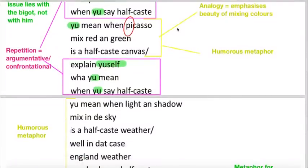You mean when Picasso mixed red and green is a Half-Caste canvas? He uses this analogy of Picasso and the fact that he mixed colours to create beautiful pieces of art. It emphasises the beauty of mixing those colours. He is unapologetic about being mixed race. He thinks it's beautiful, and likens it to art. But it's also a humorous metaphor, highlighting how ridiculous it is to think of someone who's mixed race as less than whole.